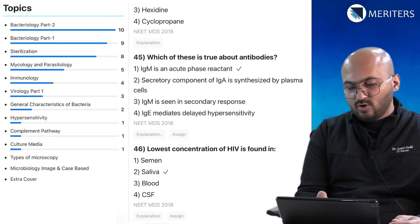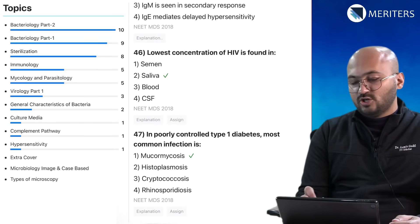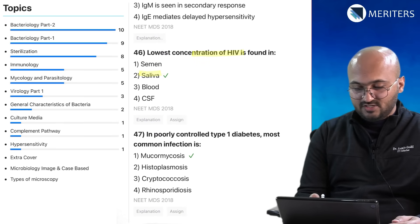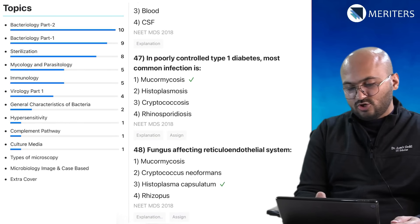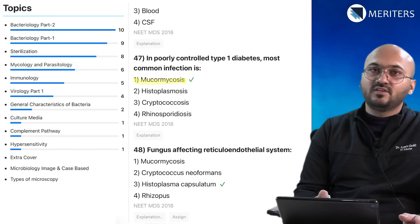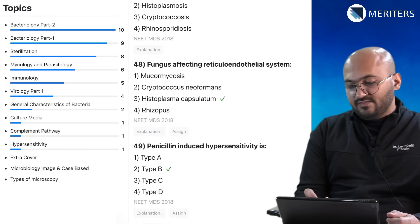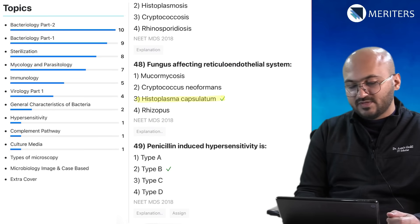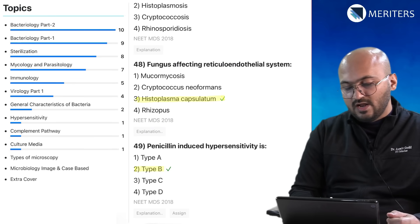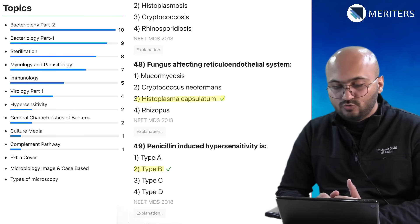Hypochlorite is not used on skin due to irritation — sterilization. True about antibodies: IgM is an acute phase reactant — that is immunology. The lowest concentration of HIV is found in saliva — a very commonly asked question. In poorly controlled diabetes the most common infection is mucormycosis — also important with regards to COVID-19. The fungus affecting the RES system is histoplasmosis. Penicillin-induced hypersensitivity is an example of type B hypersensitivity reaction.